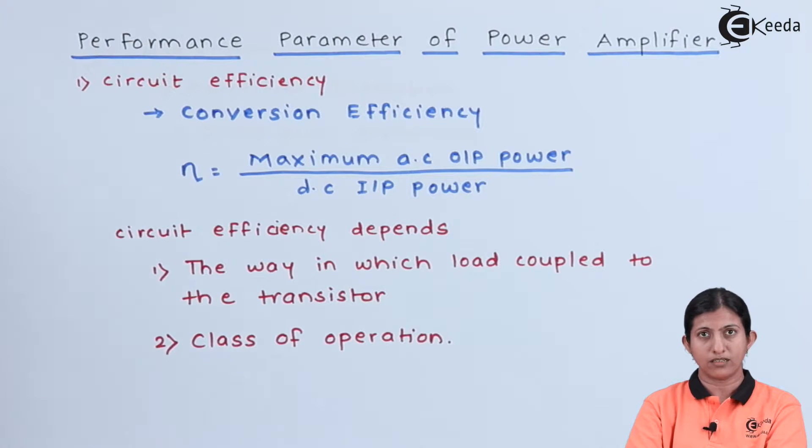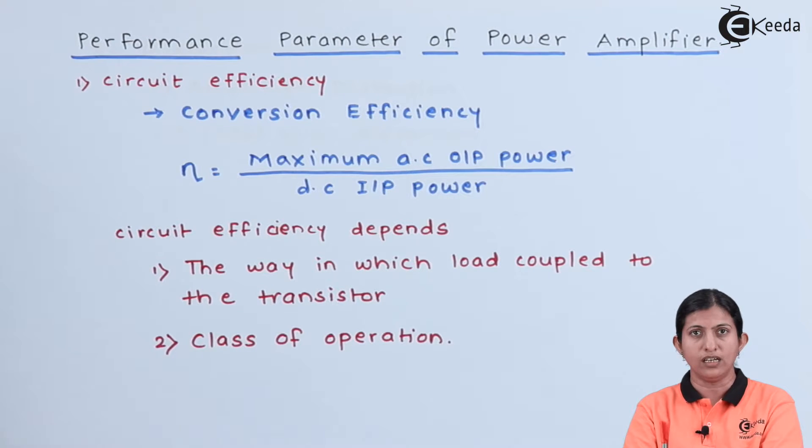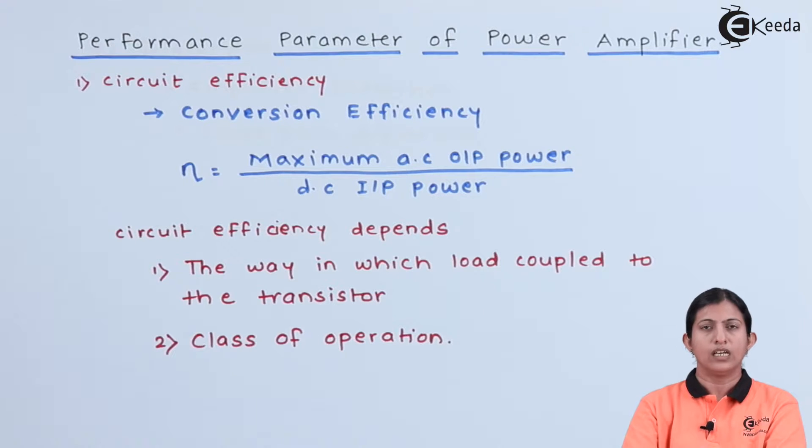The performance parameters are: the first one is circuit efficiency. The circuit efficiency is also called conversion efficiency.